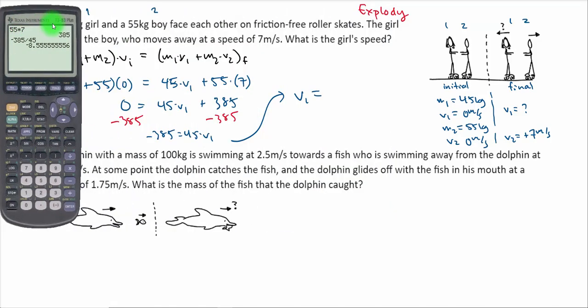If we subtract the 385, we'll have negative 385 equals 45 times V1. So V1 should be negative 385 divided by 45, and we get negative 8.56. Now the 8.56 is the velocity or the speed, but the negative indicates that the girl's going to the left. And in the picture that's the direction they should be going. It kind of makes sense as well. The lighter object is going to have a greater velocity in the end. So 8.56 is greater than 7.